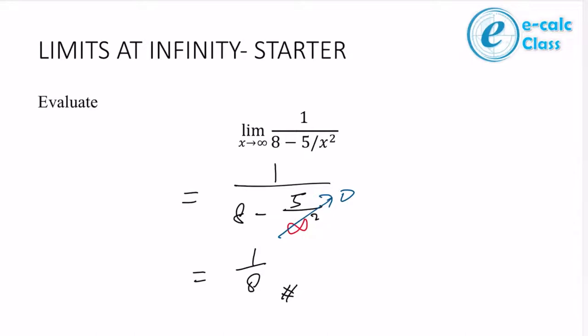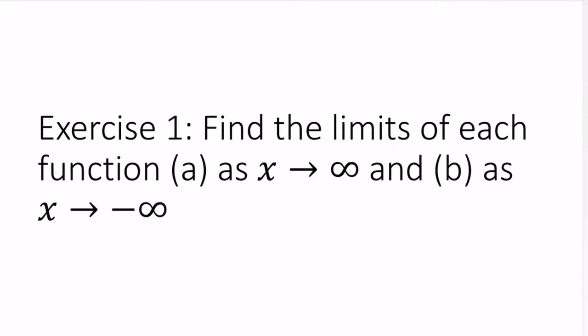When dealing with limits at infinity — usually with rational functions, or sometimes you need to multiply by a conjugate — the objective is to get as many terms of the form 'something very small over something very big', which equals infinity, so you can say those terms equal 0. This is the approach for limits at infinity.